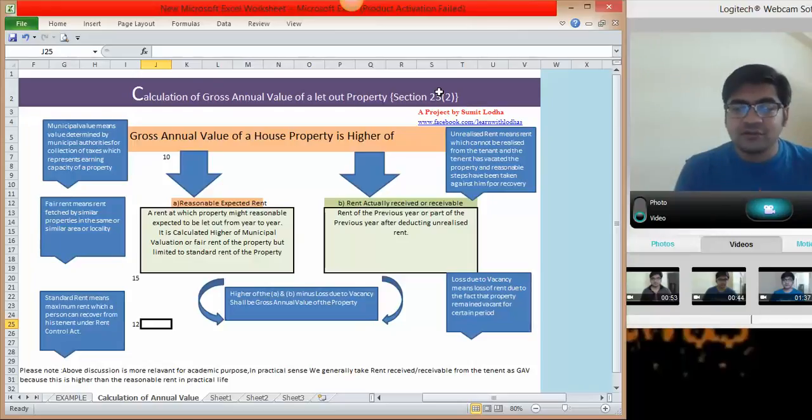Moving ahead to calculation of rent actually received or receivable. It is just simple rent of the previous year or part of the previous year, most important after deducting unrealized rent.